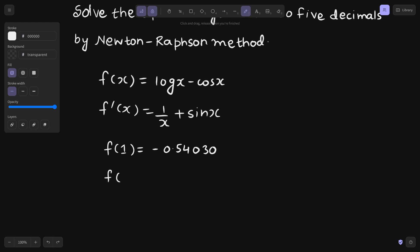So f of 2, if I check, that will be log 2 minus cos 2. We are using that to the base e, so ln in calculators. This is 1.10929.